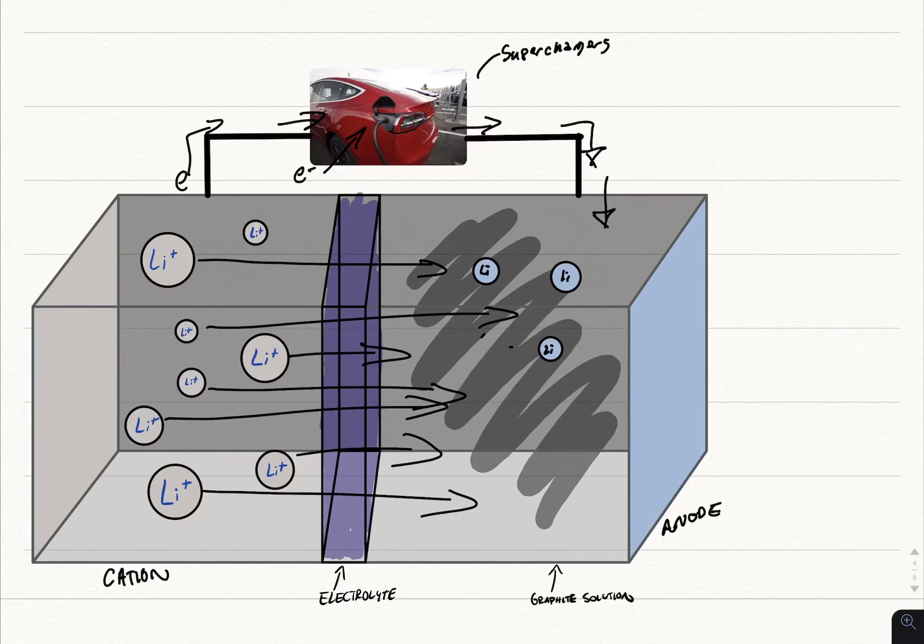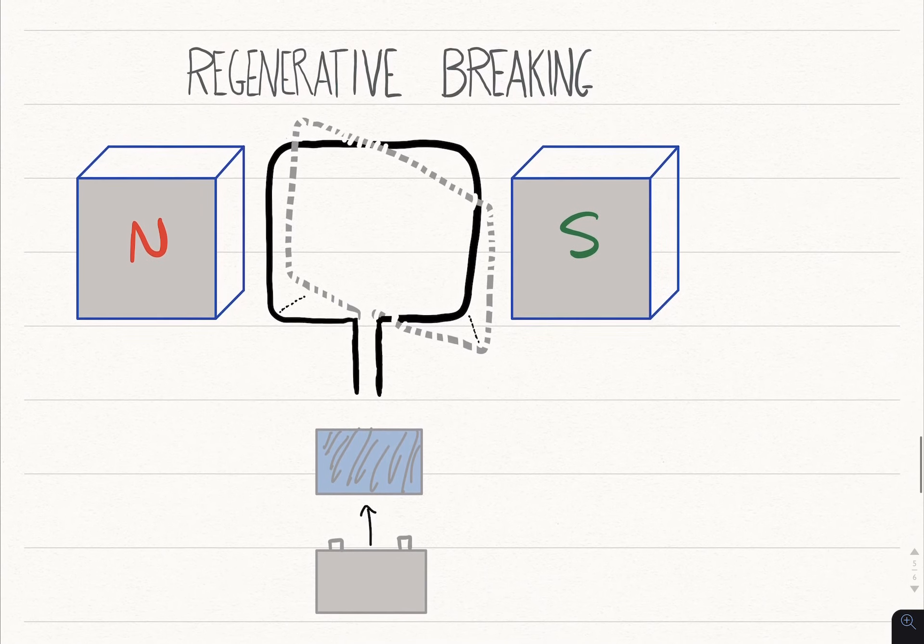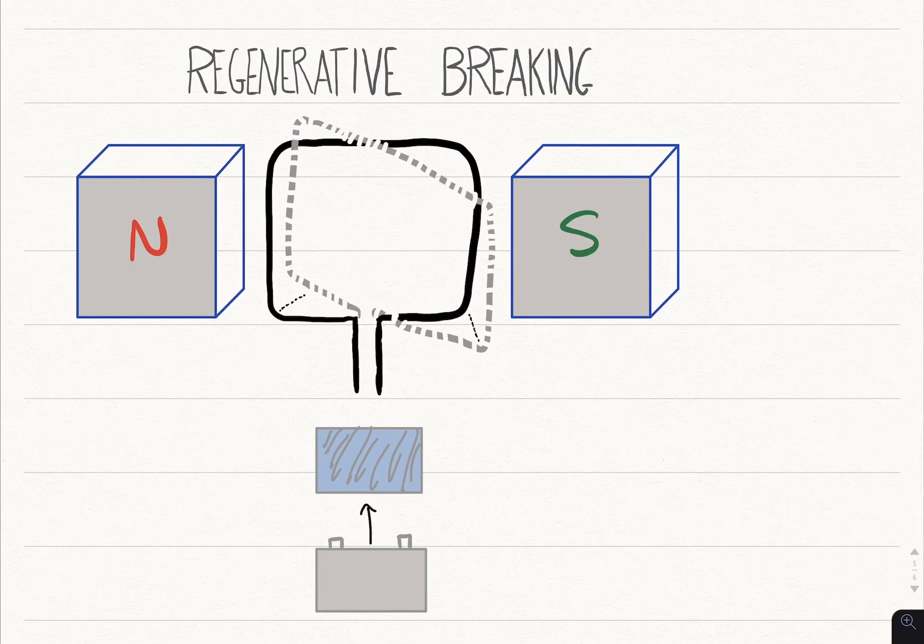Now something really cool that these electric vehicles do is called regenerative braking. Basically what it is: the Tesla battery will power a motor, and the motor will put current into a coil, and this coil spins around and rotates this magnet, which in turn rotates the wheels.